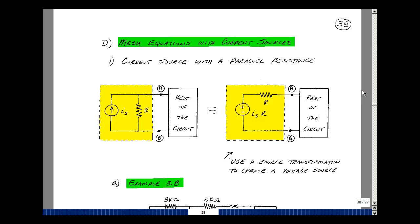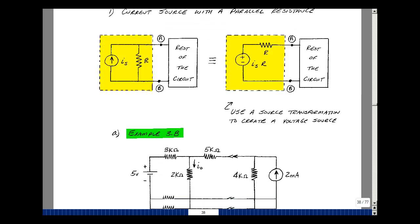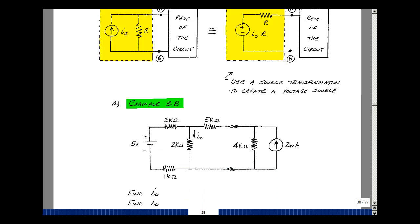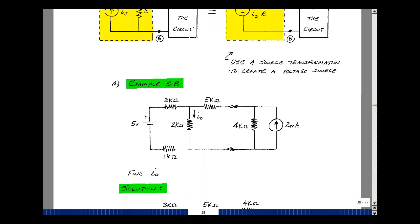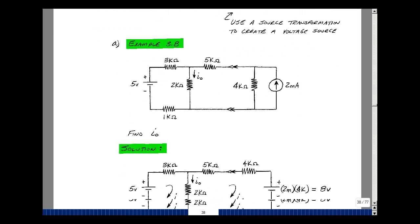Let's take a look at an example. Suppose that we want to solve for the current I0 in this resistance and I want to use the mesh equation technique because I've got a planar circuit. I need to convert this current source into a voltage source, and since I have a parallel resistance I can do the source transformation from Chapter 2.